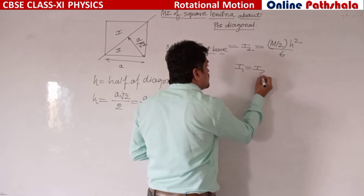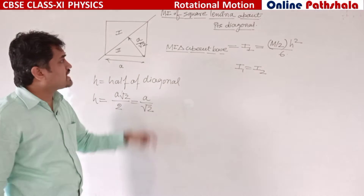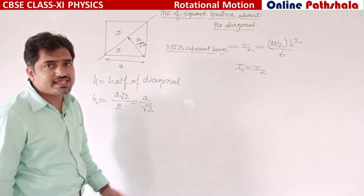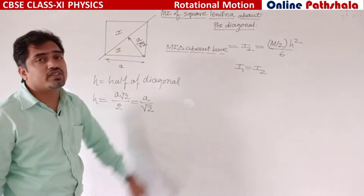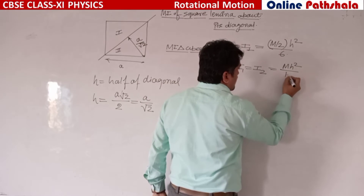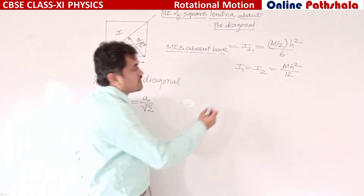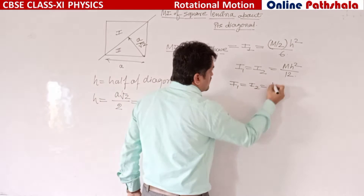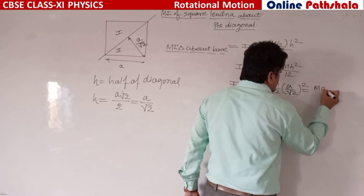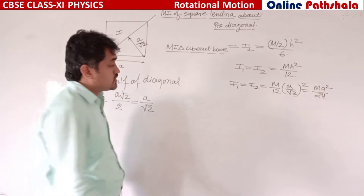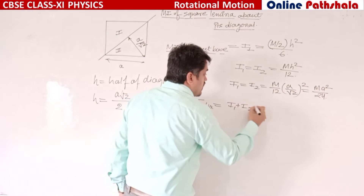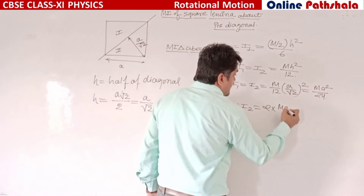I1 is equal to I2 since both triangles are the same. For both we are finding the moment of inertia about the base, so it is mh²/12. Putting in the value of h: I1 = I2 = (m/12) × (a/√2)² = ma²/24. The total moment of inertia about the diagonal equals I1 + I2 = 2 × ma²/24 = ma²/12.